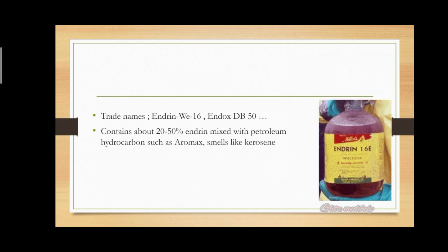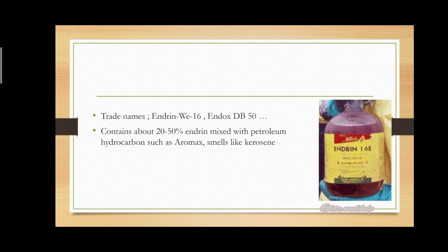The trade names under which endrin is sold include Endrin V16, Enddox EC20, Endox DB50, and so on. All these products contain about 20 to 50 percent of endrin mixed with petroleum hydrocarbons such as Aromax, which smells like kerosene. This is an important point: in postmortem appearance, when the mouth and stomach contents smell like kerosene, it is indicative of this agricultural poisoning.